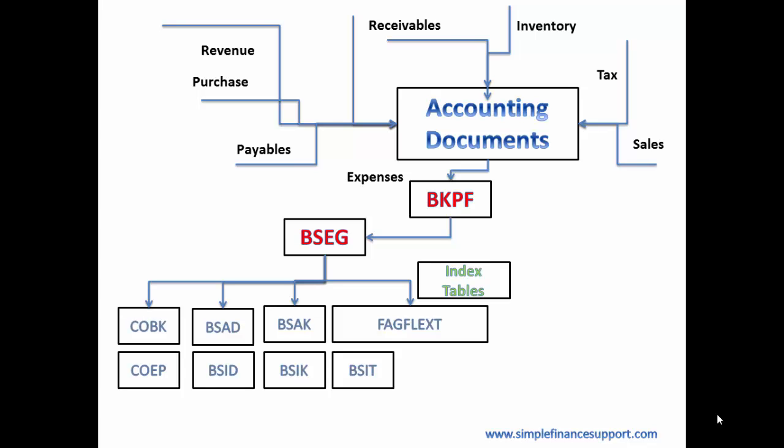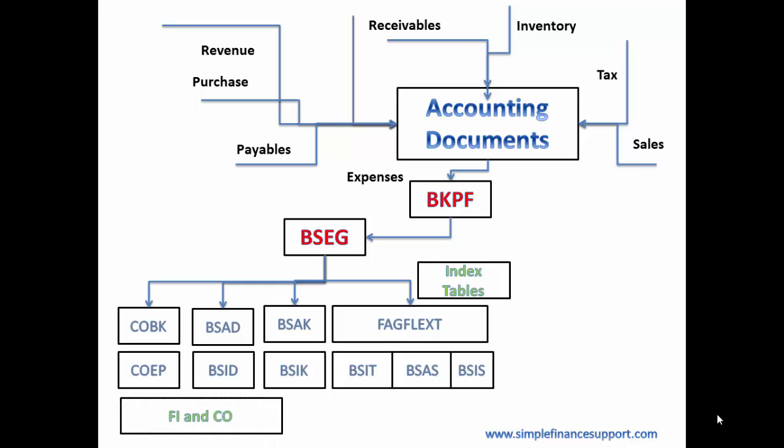In New GL, for ledger postings we have a table called FAGLFLEXT, the totals table for New GL, which is updated along with other index tables like BSAS and BSIS, which are open items and cleared items tables. If you carefully observe, for one single accounting document a bunch of other tables are posted along with the header table and line item table. So you have FI modules, CO modules, and other ledgers — many many tables are involved in the overall technical architecture.